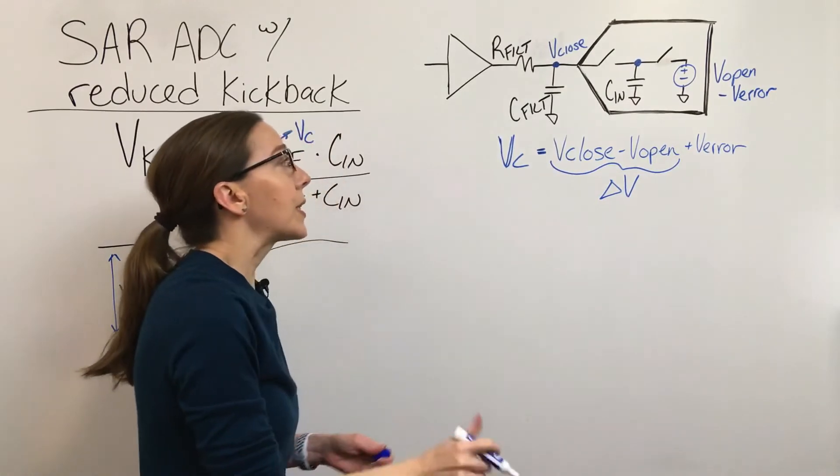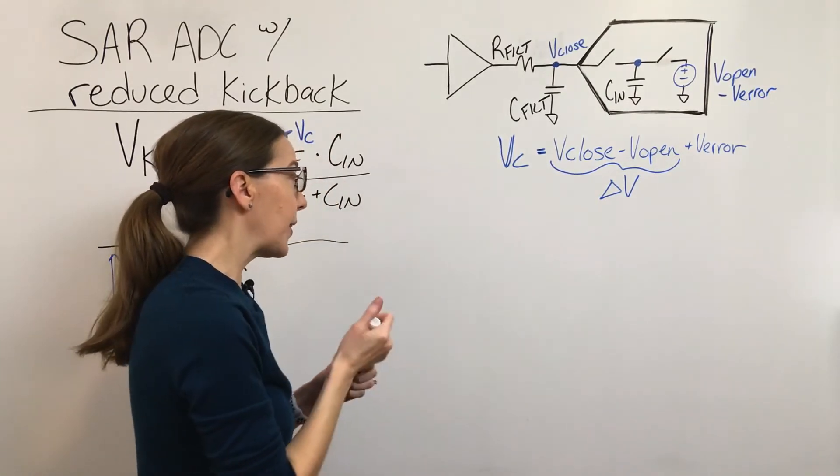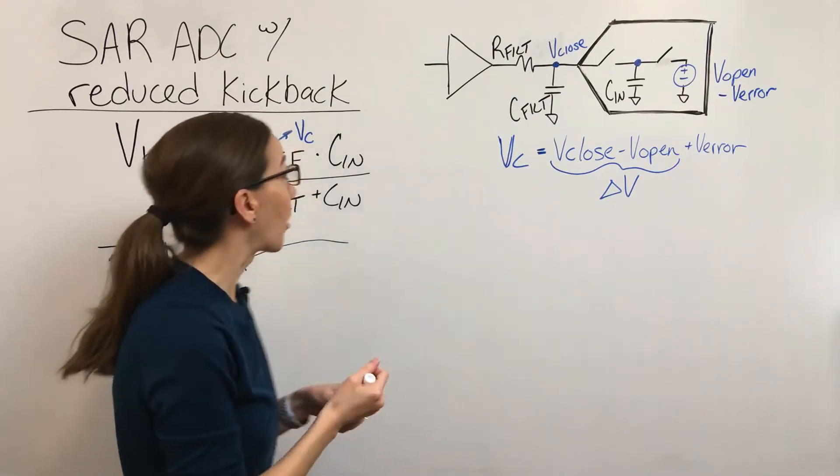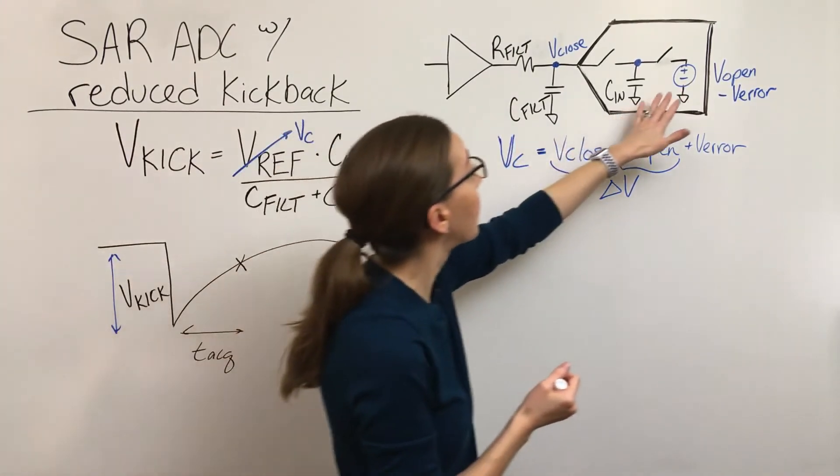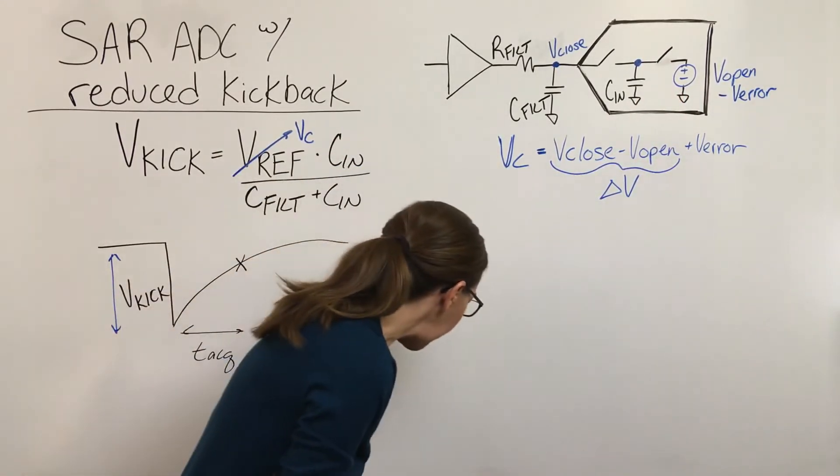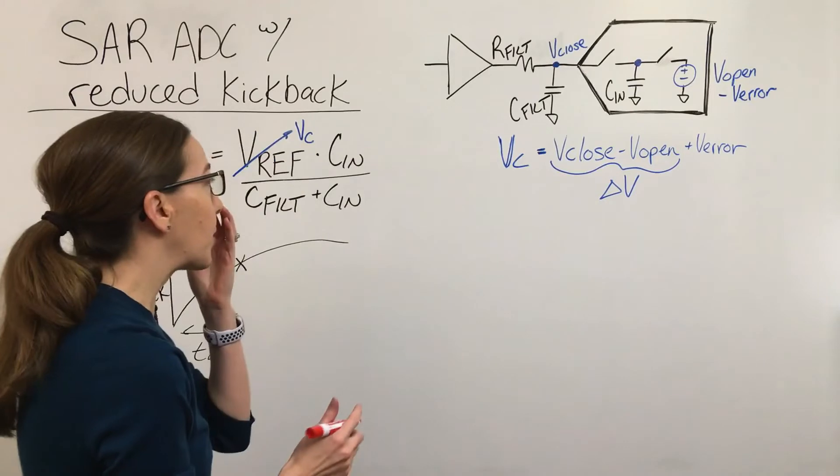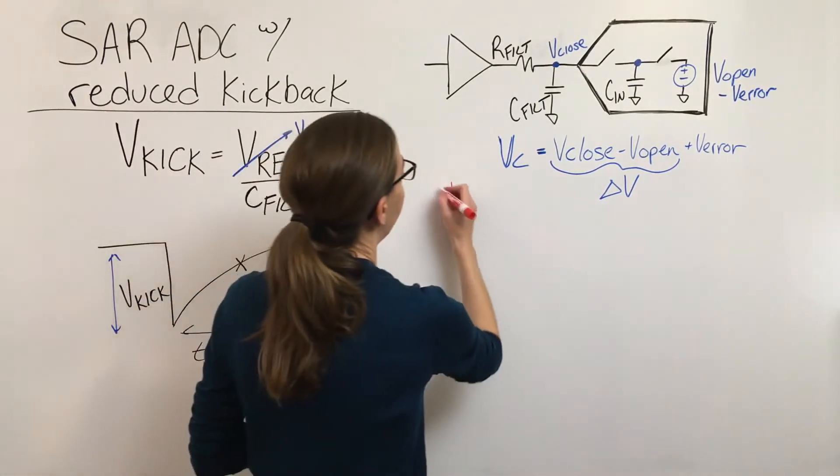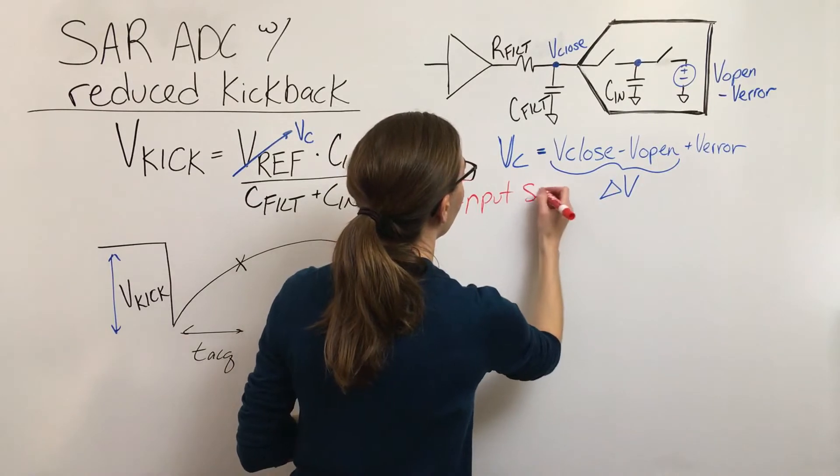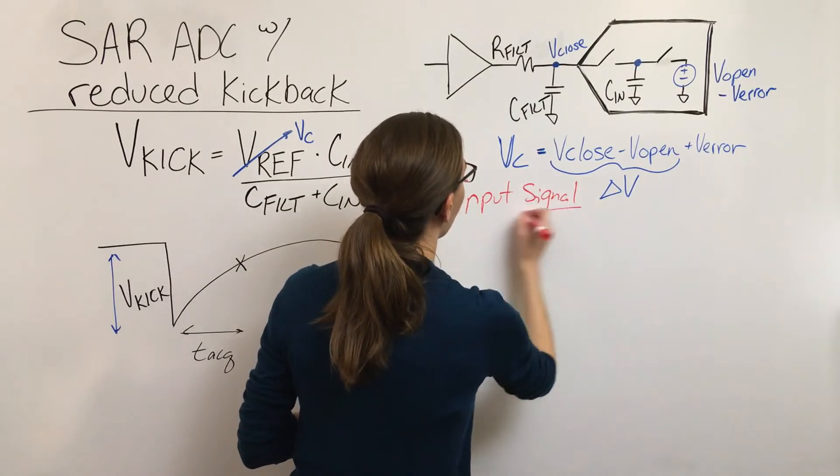So this VC is going to be dependent on the input signal, the signal that you're driving into the circuit, which is different than the way that we modeled it when you're discharging to ground. So if we think about our input signal in terms of a couple of different cases.